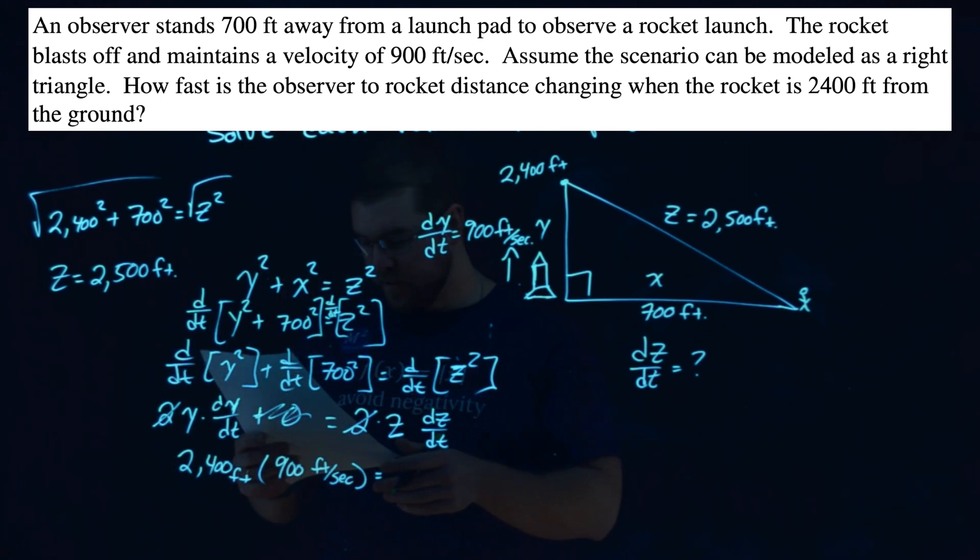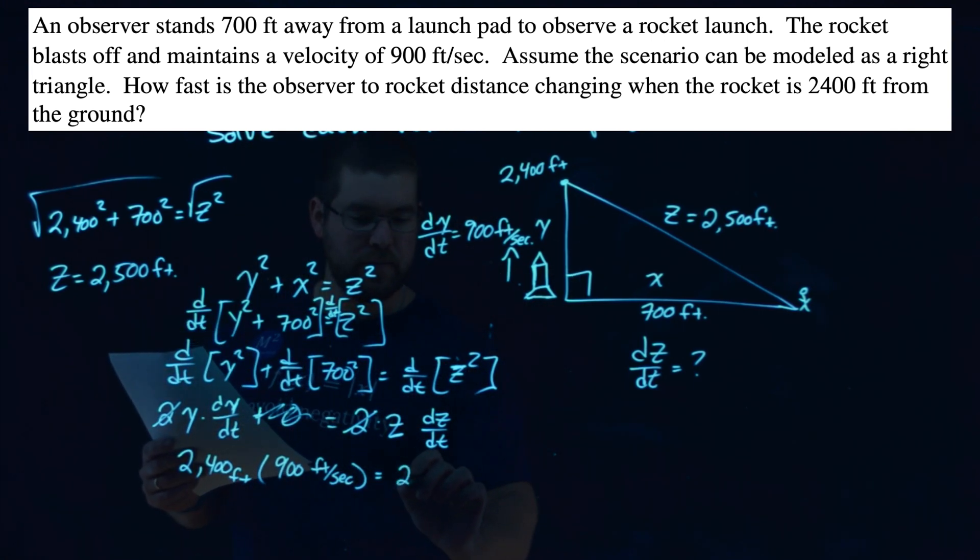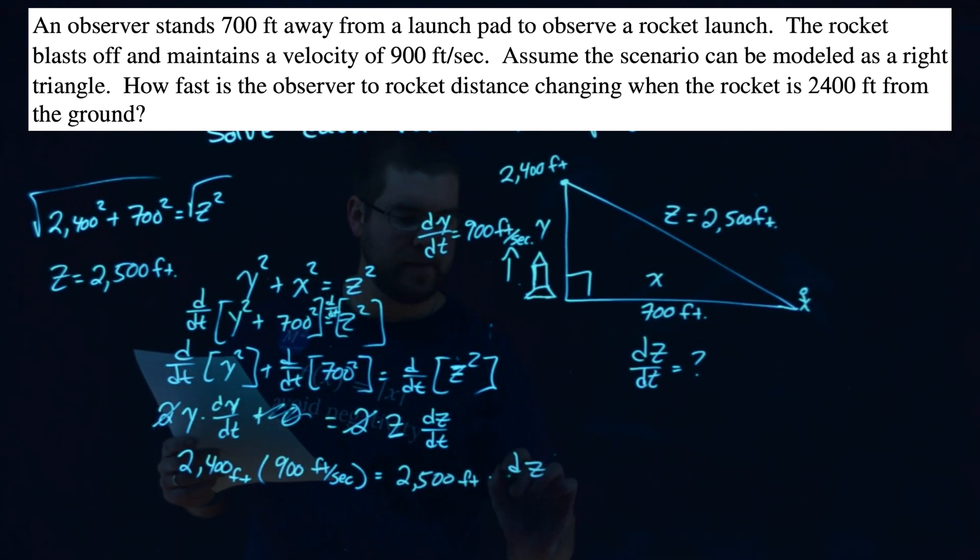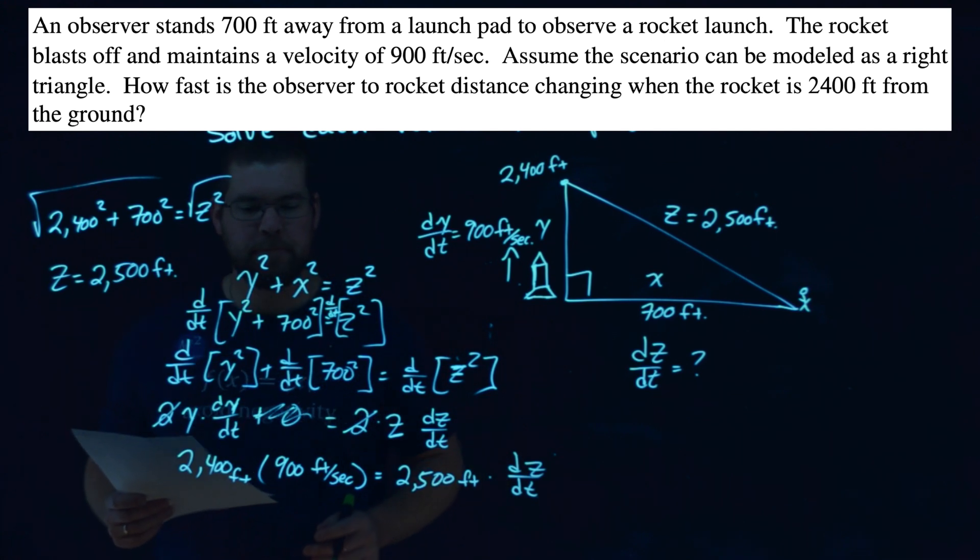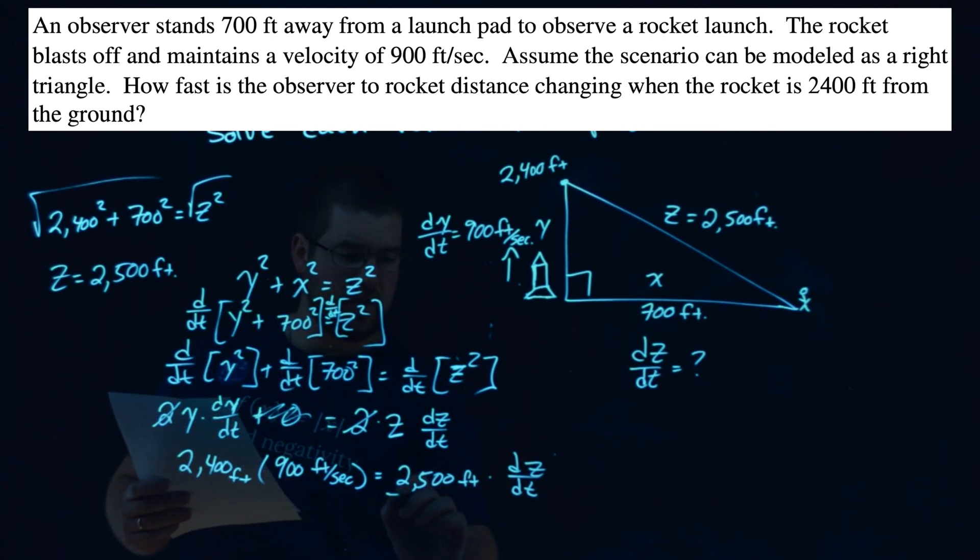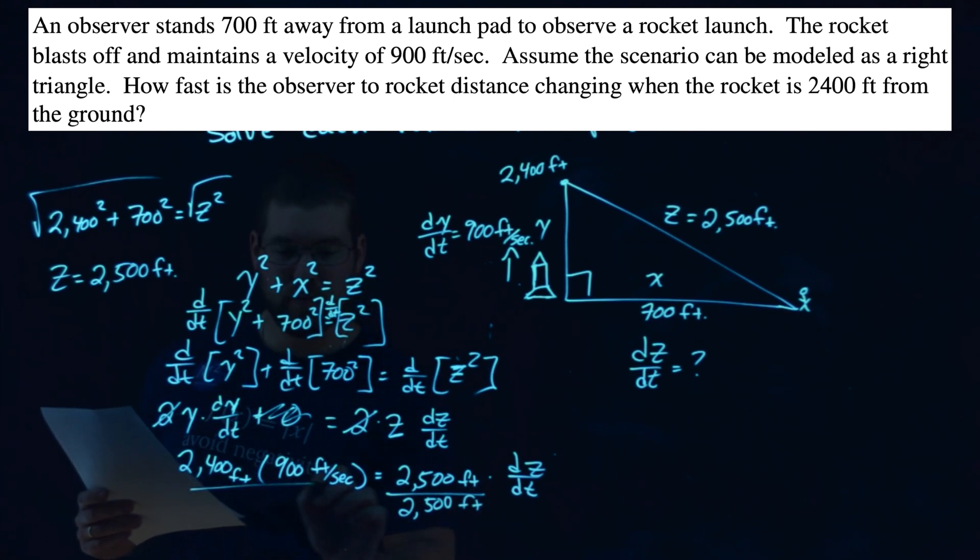And that's equal to Z, which we found, 2,500 feet, times the rate, dZ/dt, which we want to find. So now, to get that by itself, we divide both sides by 2,500 feet.